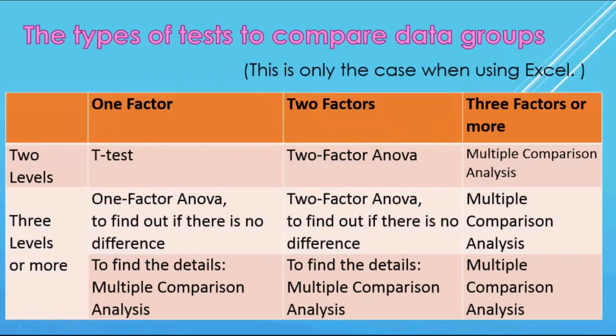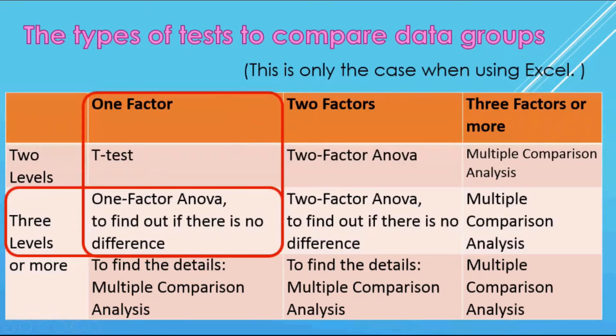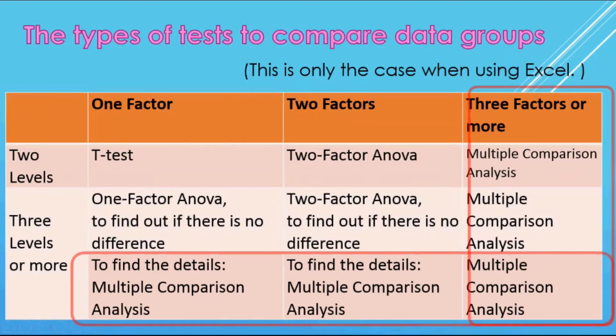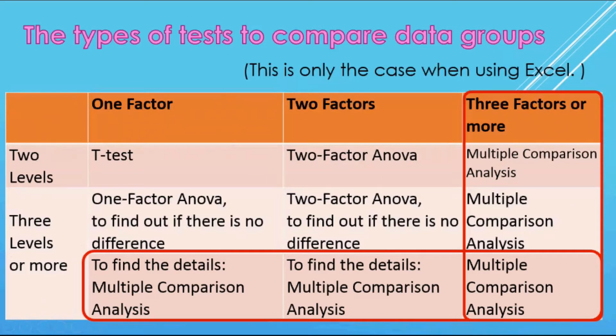This ANOVA content may be very confusing, so I summarized it in the table. This is only the case when using Excel. When there are only two data groups to compare, meaning there is only one factor with two levels, you can use T-test. If there is one factor but three or more levels, you can use one factor ANOVA, but this is when you want to find out if there is no difference. When there are two factors with two levels each, you can use two factor ANOVA. You can still use ANOVA when you want to check that no difference in the data group with two factors with levels of three or more. But if you want to know the details in the data, you have to use multiple comparison analysis.